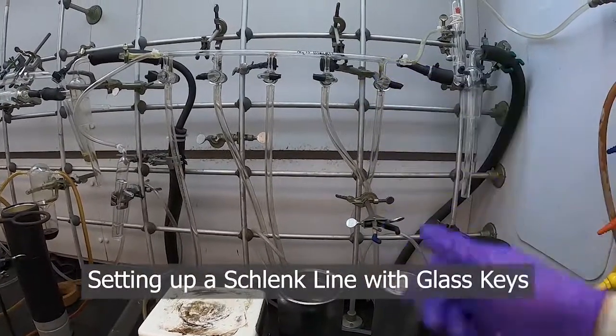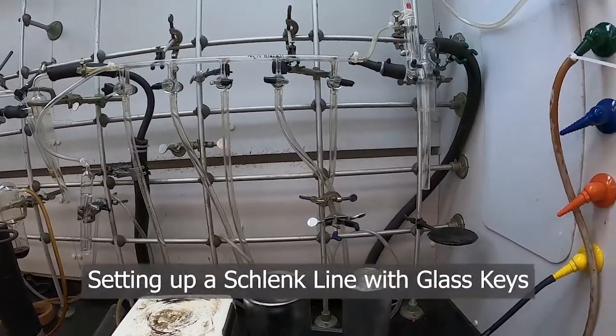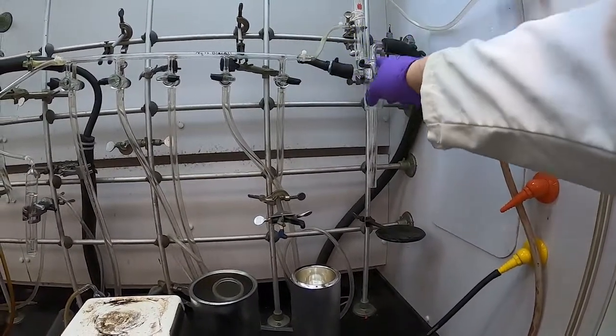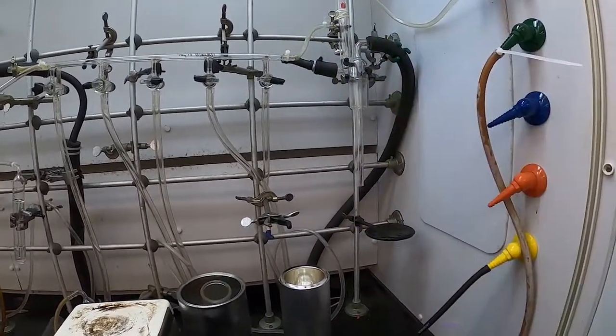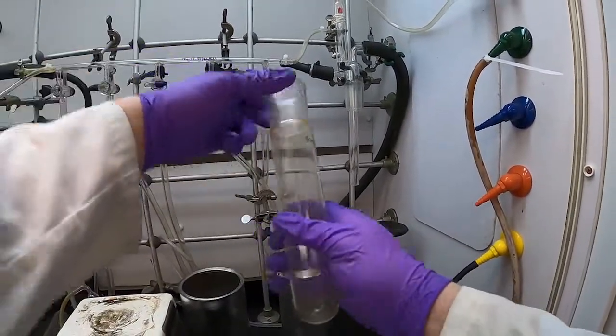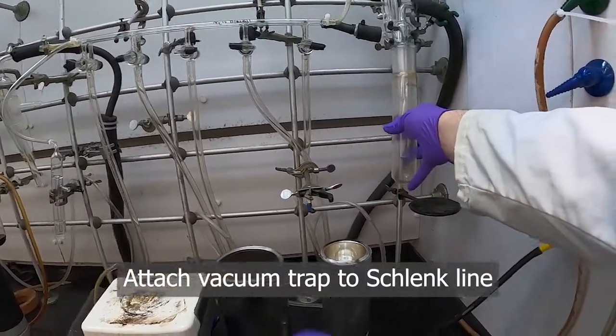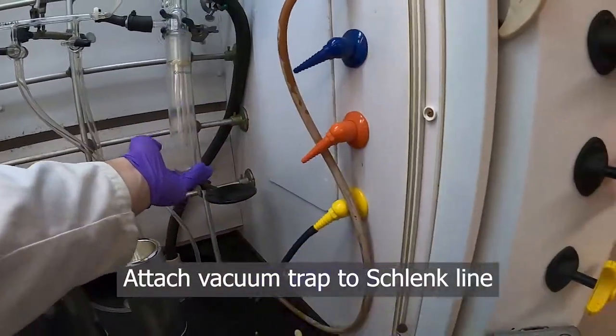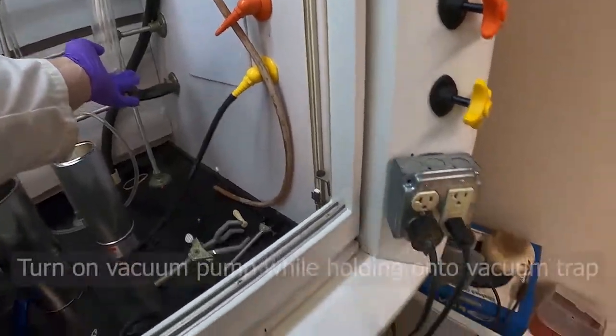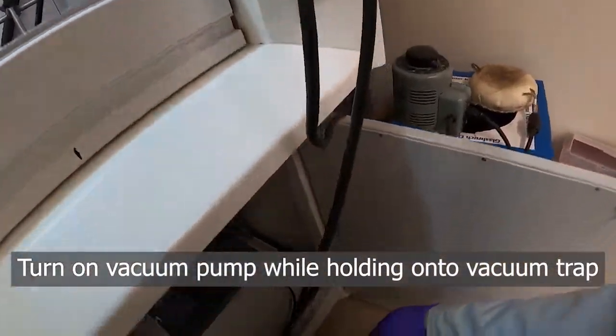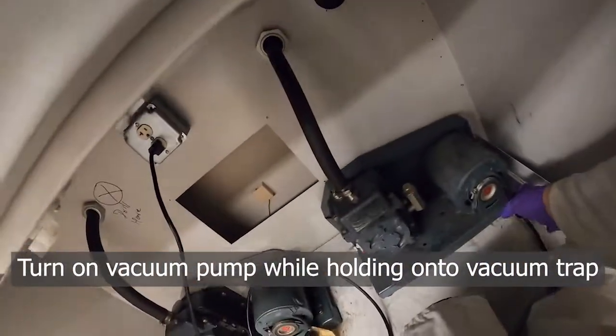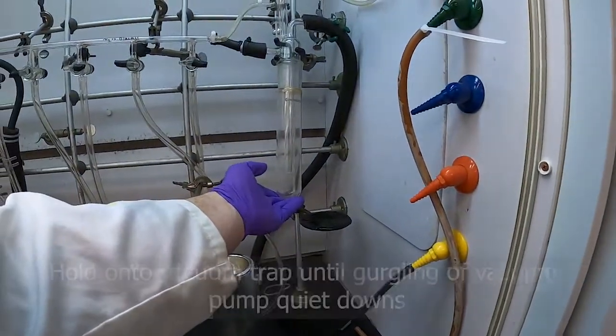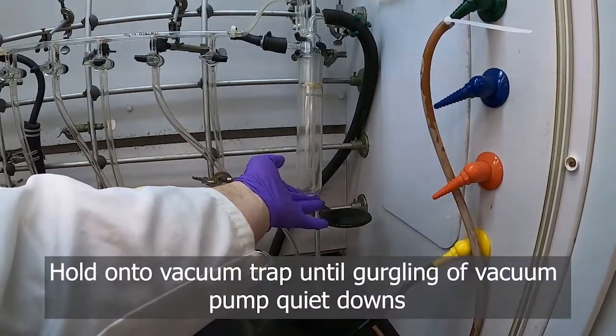So setting up the glass key type Schlenk lines is a little bit different. As you'll see, there's no shutoff valves here around the trap portion where the vacuum comes in. So we'll just take our trap, put it over our stem here, and then I'm going to reach down here below me and turn on the pump. Now that our pump is on, we got to hold the trap the entire time.